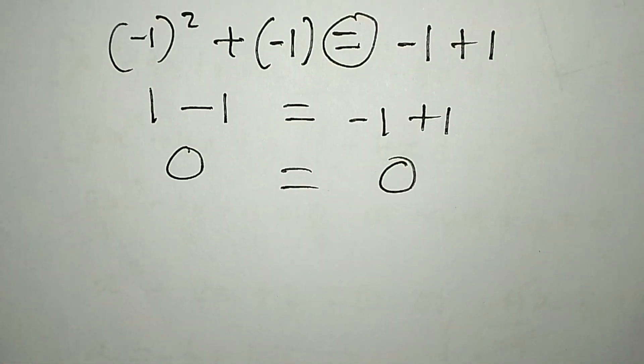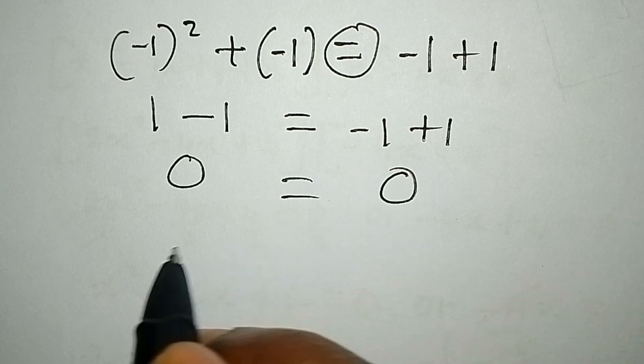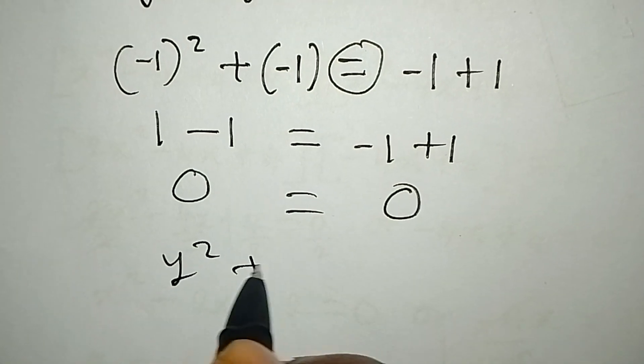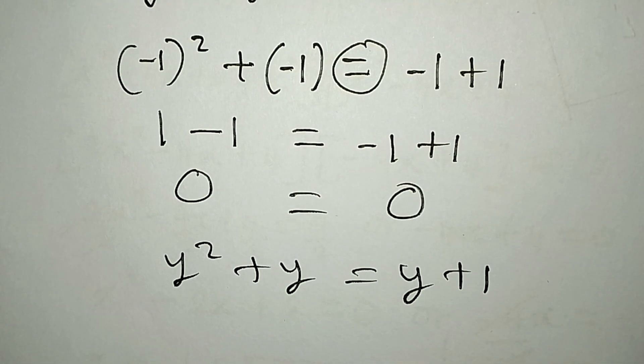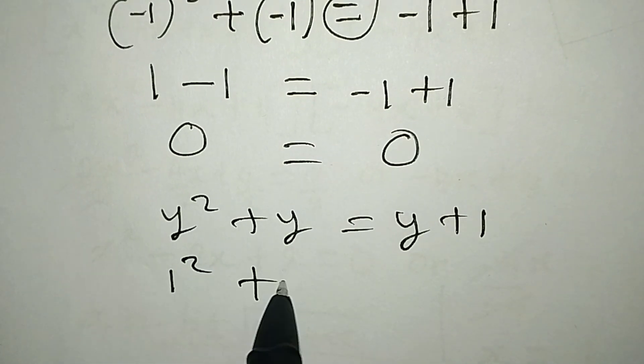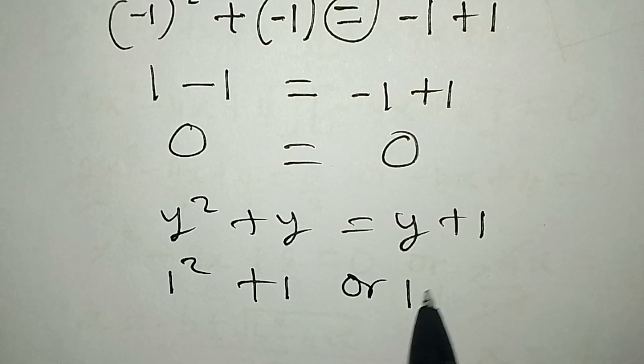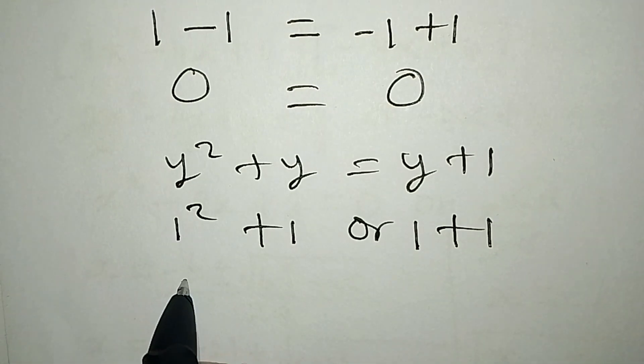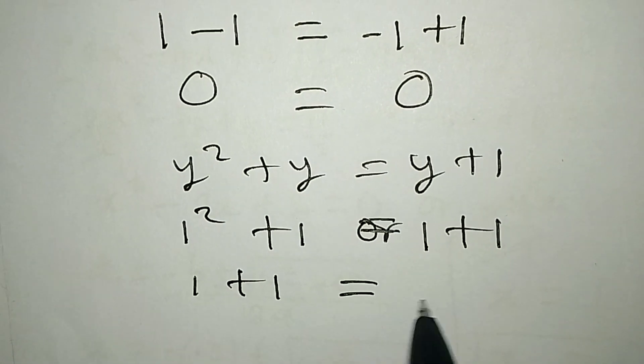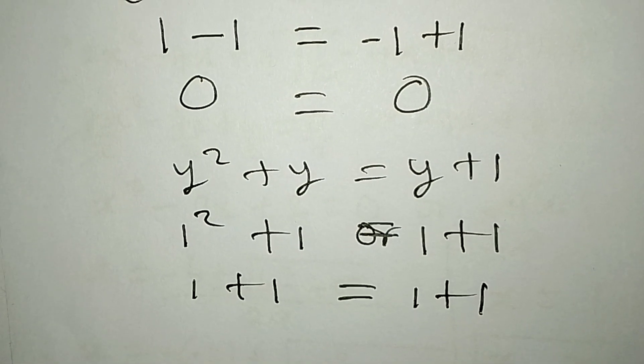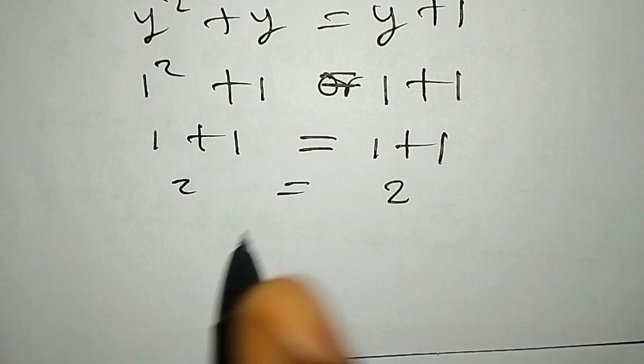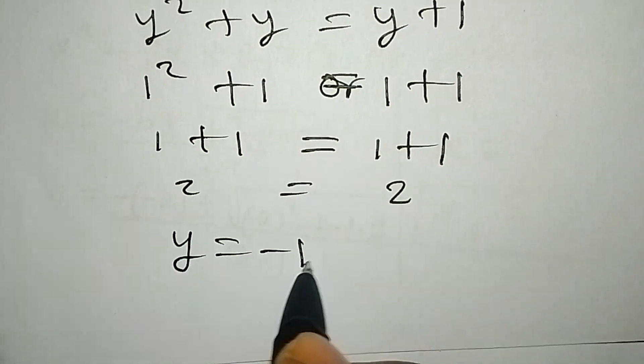Now to confirm the second value of y: y squared plus y equals y plus one. In place of y, we have one squared plus one, which equals one plus one. This equals one plus one. So we have two equals two. This means y equals negative one or one both satisfy the equation.